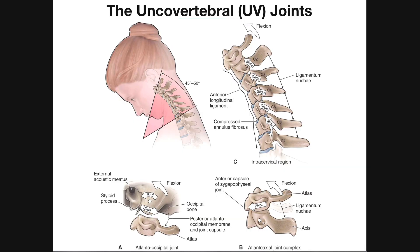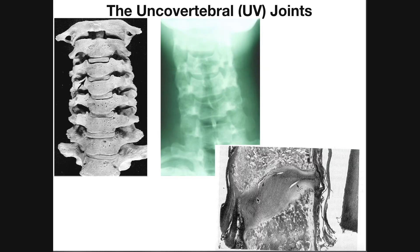Let's see what happens when this person goes into full cervical flexion — approximately 45 to 50 degrees range of motion. Remember what the bipartite disc allows: because the superior part of the disc is semi-separated from the inferior part, the superior part can actually translate a little bit on the inferior surface.